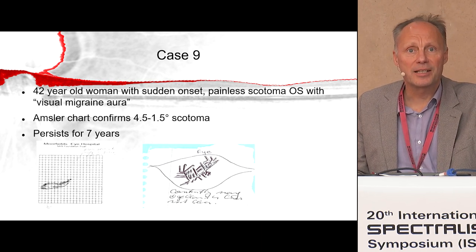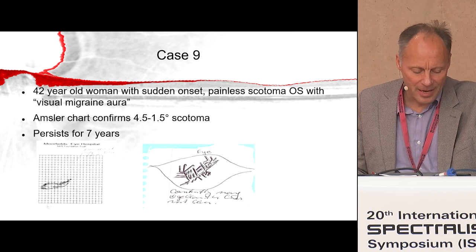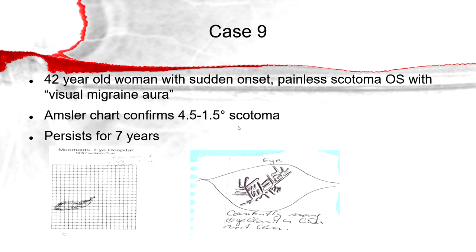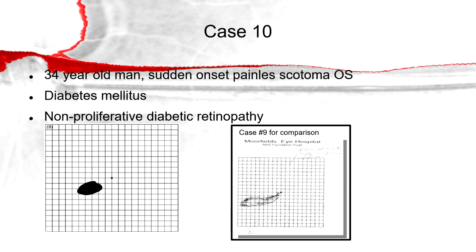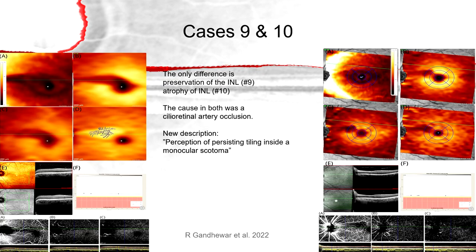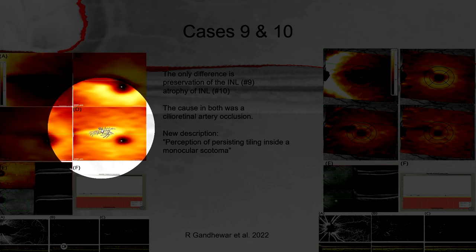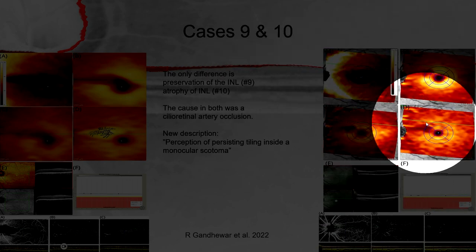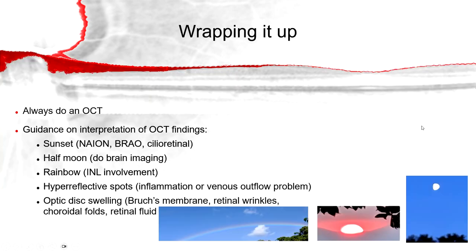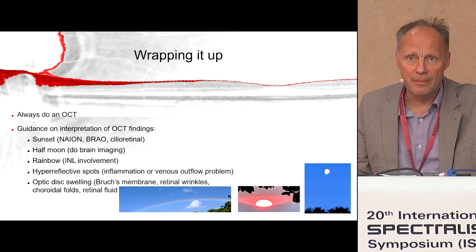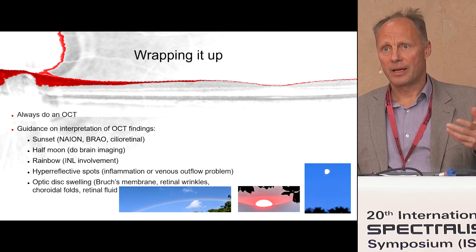Two cases in parallel: a lady who presented with a scotoma in which she saw very curious tiling images, and a gentleman who in exactly the same area has a black spot. The only difference between them is preservation of the inner nuclear layer. In the first patient you see the retinal nerve fibre layer, ganglion cell layer, and inner plexiform layer, with preserved inner nuclear layer. In the second patient that inner nuclear layer is also atrophied. I think there is a role for the inner nuclear layer in these types of symptoms.